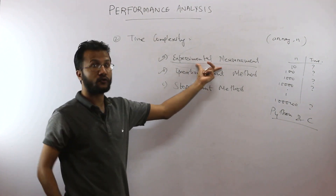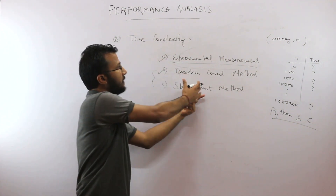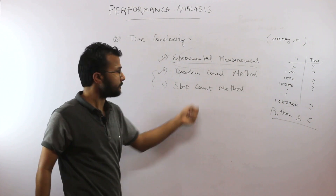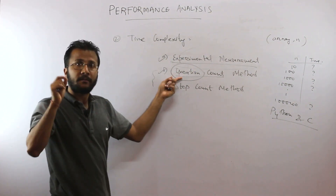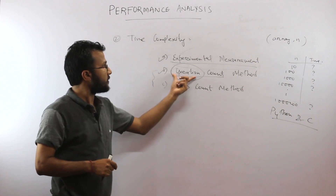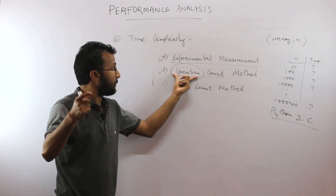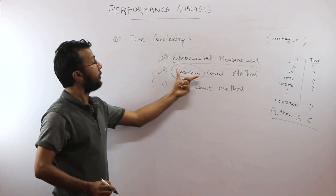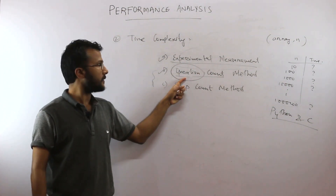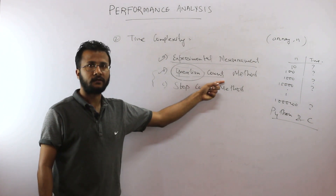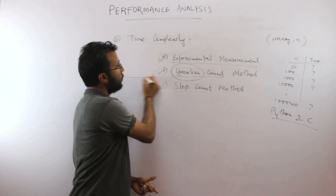The second method is the operation count method. You do not need to implement the algorithm as a program for this — it is a mathematical approach. You identify the most critical operation in your algorithm, find out how many times that operation is executed, and then estimate the time complexity from that count.